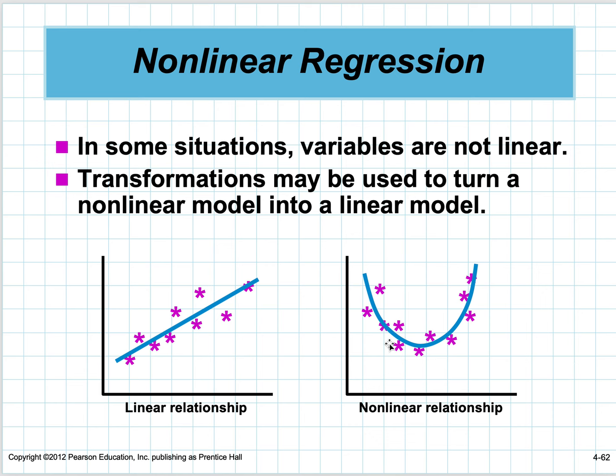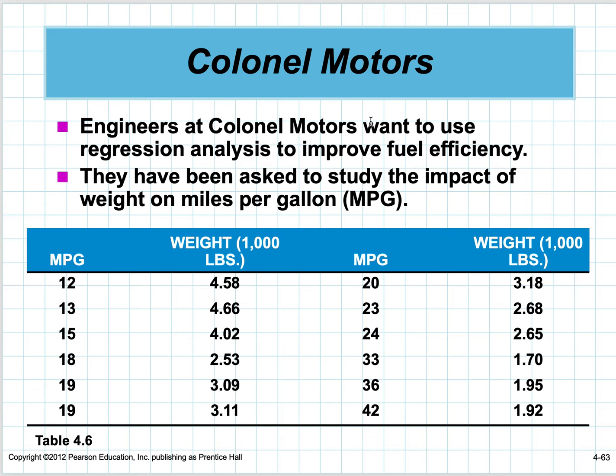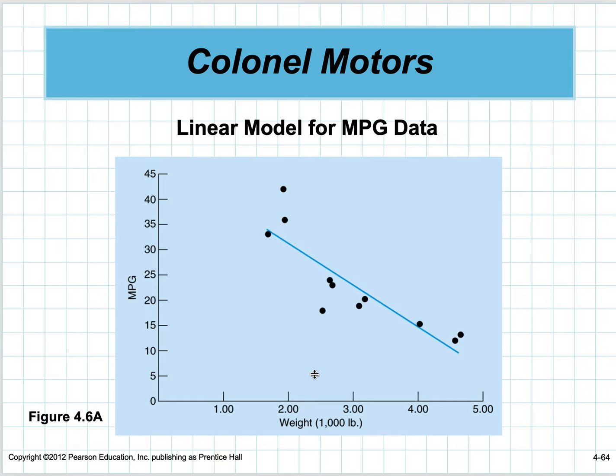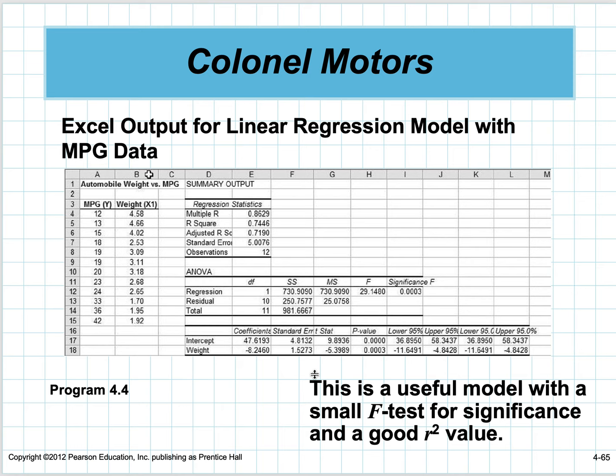Colonial Motors wants to use regression analysis to improve fuel efficiency. They have some data—this is similar to a problem you'll have in homework. You have miles per gallon and the weight of the car. When plotted and a regression run, it's significant—R-squared is 75%, not bad.